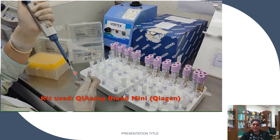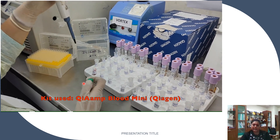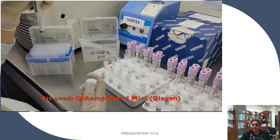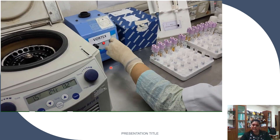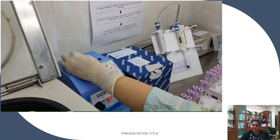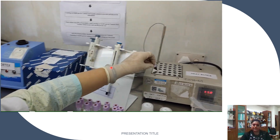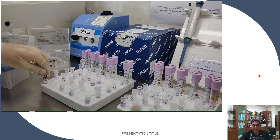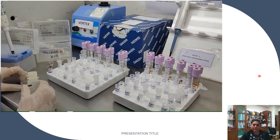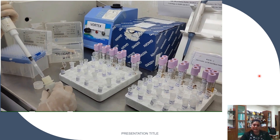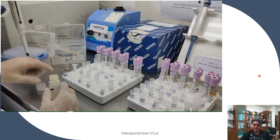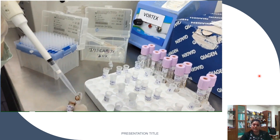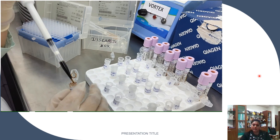Now that we have added the buffy coat, we will add the proteinase K provided in the kit — we are using the Qiagen DNA Mini Kit. After adding proteinase K, we add the genomic lysis buffer. Once both reagents are added, we vortex the mixture for homogenization, and the sample is incubated at 50 degrees Celsius for around 10 to 15 minutes. Once incubation is done, absolute ethanol — or alternatively isopropyl alcohol — is added to pellet the DNA and help it attach to the silica column. Homogenize again and transfer the whole mixture to the silica column.